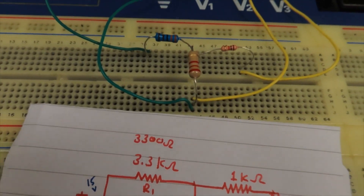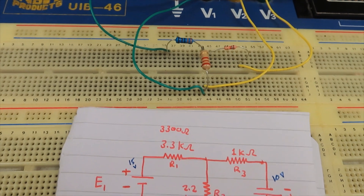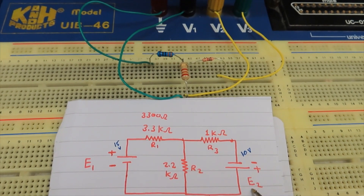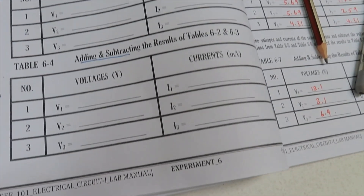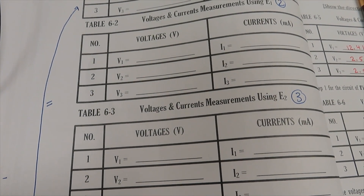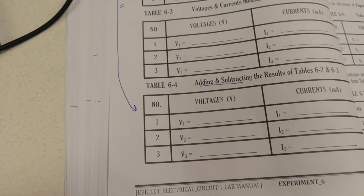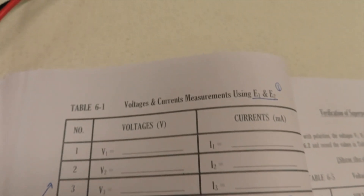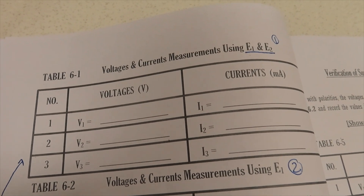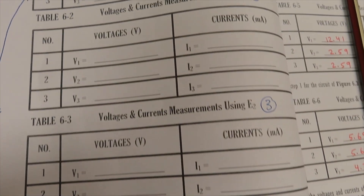Then we will use E2 only — this one — and E1 will be shorted, and we will see the impact of E2 in the circuit. Then in the last table, we will add and subtract the results measured. Finally, this table should be equal to the first table, because that table was measured with the impact of both E1 and E2, and this one is adding and subtracting the results produced individually.